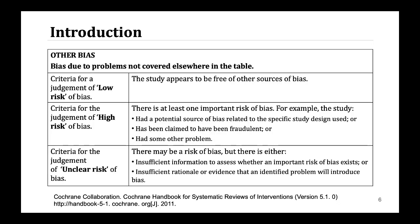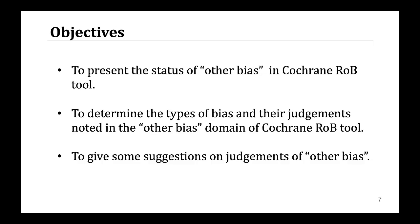When we use the Risk of Bias tool to evaluate Other Bias, we may read the Handbook and find detailed information to guide us. But the definition of Other Bias in the Handbook is that bias is due to problems not covered elsewhere in the table. By using the Handbook, we don't know how to handle it. Thus, we conducted this study to present the status of Other Bias in the Cochrane Risk of Bias tool, to determine the types of bias and their judgments noted in the Other Bias domain, and to give some suggestions.